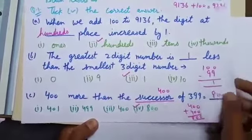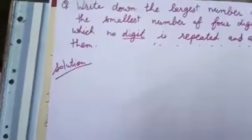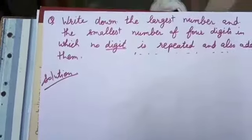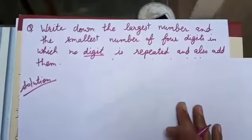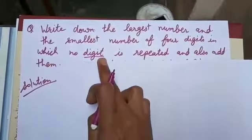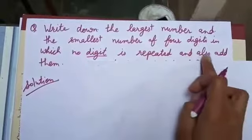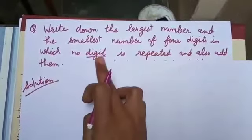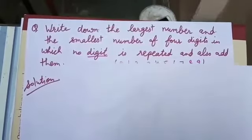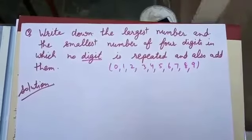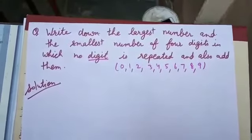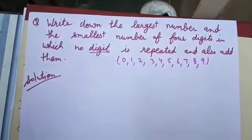Now come to the next question. Write down the largest number and the smallest number of 4 digits in which no digit is repeated and also add them. Digit means any of the numbers from 0 to 9. Now as we are familiar with the largest and smallest 4-digit numbers.